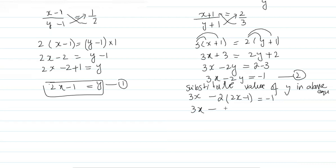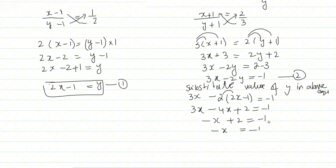Expanding: 3x − 4x + 2 = −1, so −x + 2 = −1, meaning −x = −1 − 2 = −3. Dividing both sides by −1: x = 3.